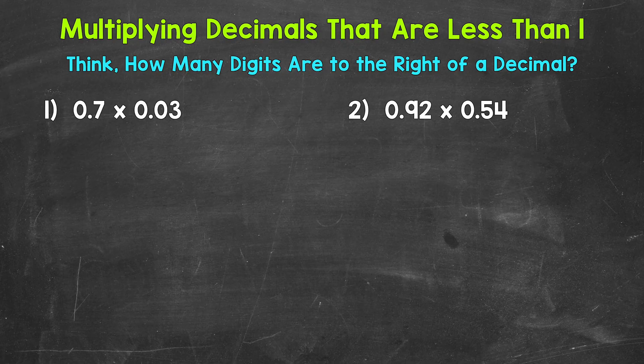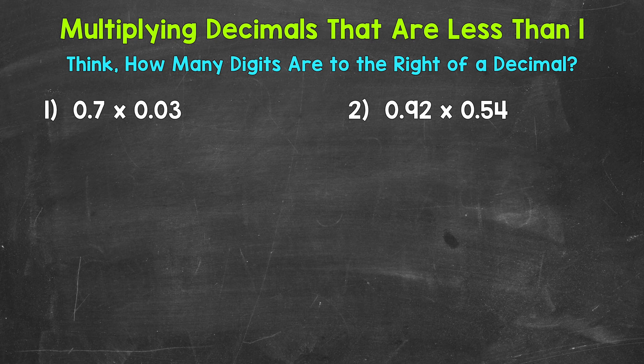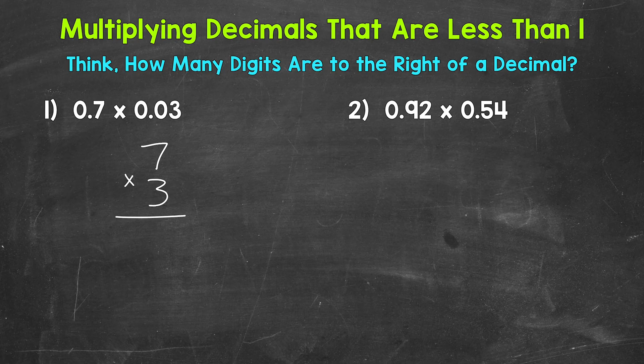The first thing that we're going to do, we're going to take the decimals out and rewrite this problem vertically, so up and down, using whole numbers. So we're going to rewrite this as 7 times 3. Again, we're taking the decimals out.